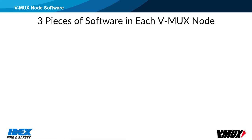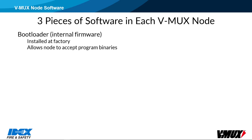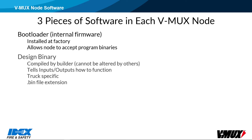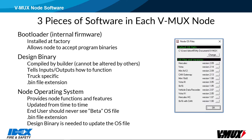There are three pieces of software that go into each node. The bootloader is internal firmware installed at the factory; it allows the node to accept the program binary files. The design binary tells inputs and outputs how they are supposed to function — this file is compiled by the vehicle builder and cannot be altered by others. Design binaries are truck specific. The node operating system or OS file provides functions and features for the node. These files get updated from time to time. Generally, there is no need to reload nodes every time a new OS file is released. In order to update the OS file, you must have the design binary file. It is possible to reload the design file without updating the OS, but the VMux downloader program will not work unless the OS files are installed on the computer.